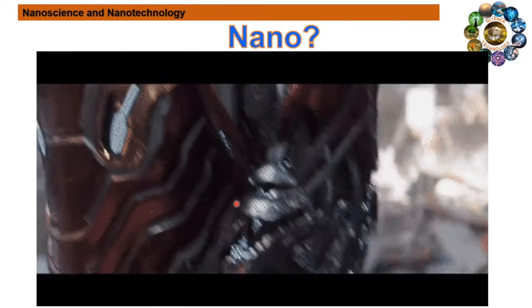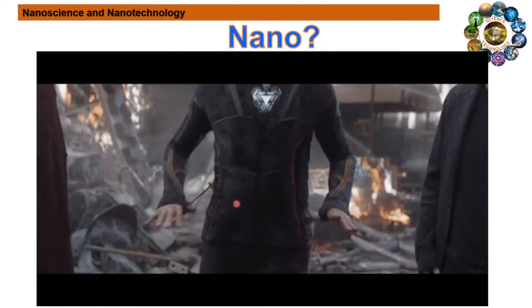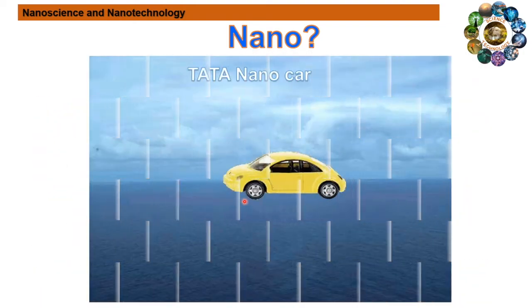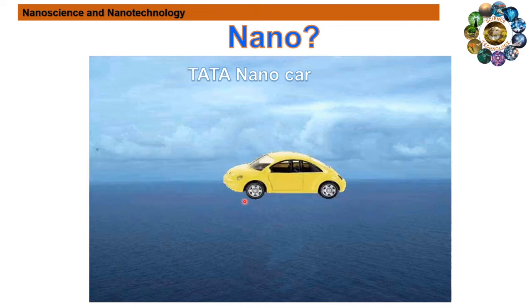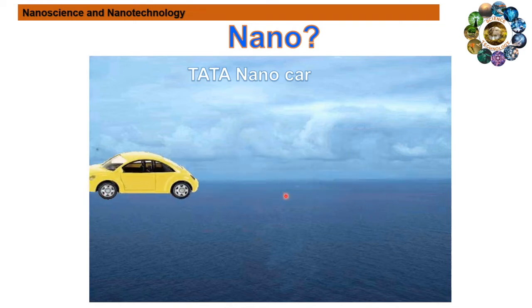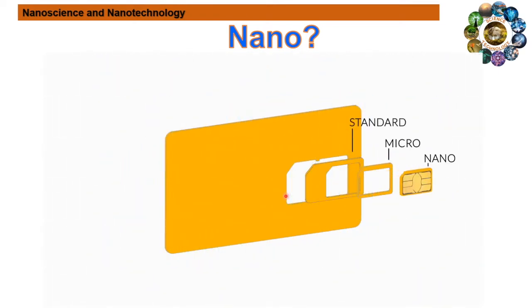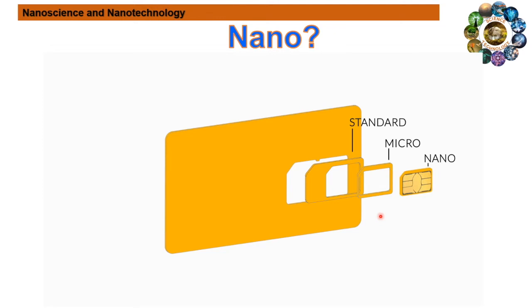For example, in the recent Hollywood blockbuster Avengers: Endgame, Iron Man wears a suit built with nanotechnology. In another example, in 2018, Tata Motors introduced the Nano car, also known as the world's cheapest car, which created a significant impact in the Indian automobile market. Most people are also familiar with the nano SIM — even people who are not formally educated know the word nano through mobile phones. In this way, most of us have already encountered the word nano.